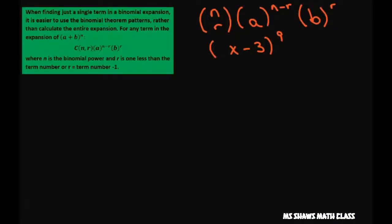So here we get started. We want the term for x to the 5th and I'm going to use this formula here. When finding a single term, it's easier to use this formula. In our case, our n is 9, our a is x, and our b is negative 3.